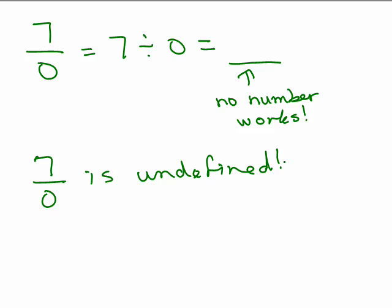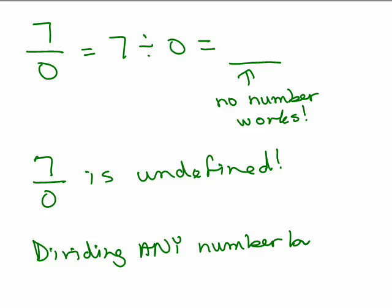So any time you're dividing by 0, notice if 0 was in the denominator, it didn't matter if it was a 0 in the numerator or some other number, it ended up being undefined. So dividing any number by 0 is undefined.